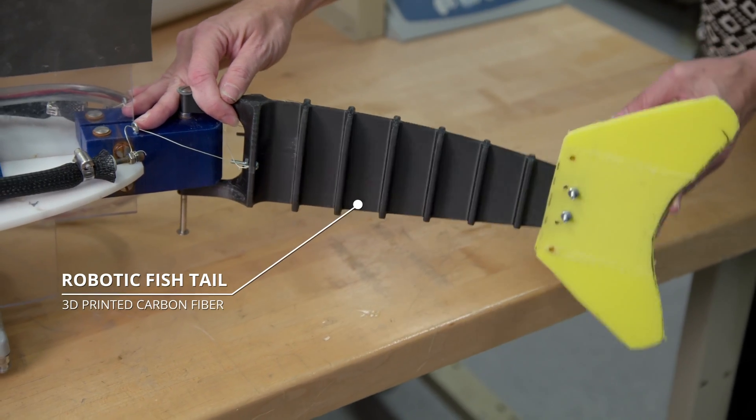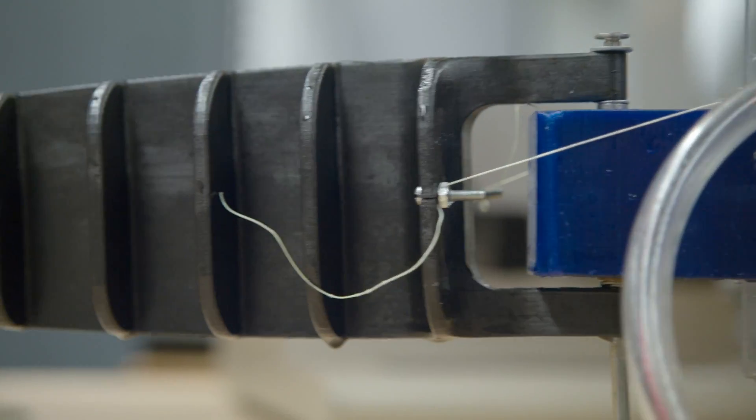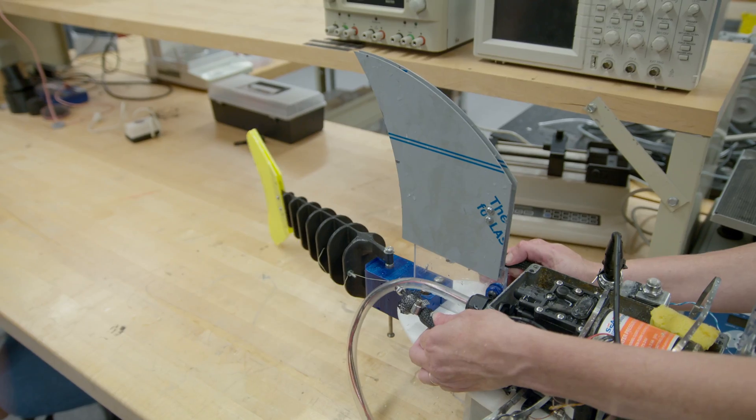One of the students was in the 3D printing class and also working in my lab at the time and decided that he wanted to try printing something that had variable thickness and basically gave the tail variable stiffness.